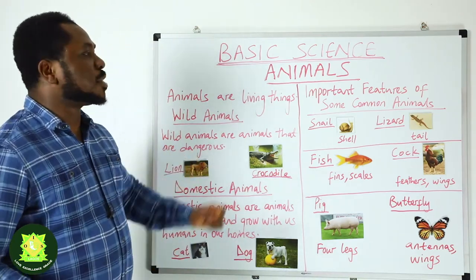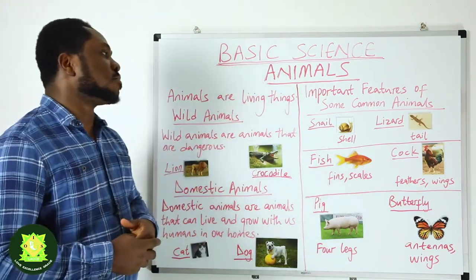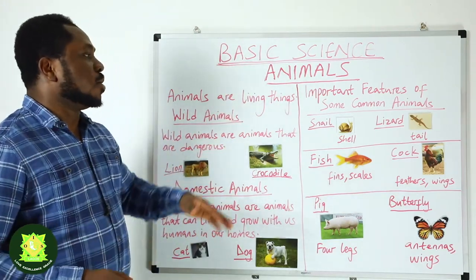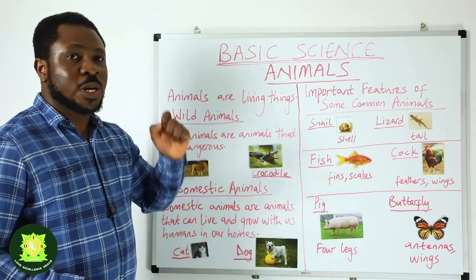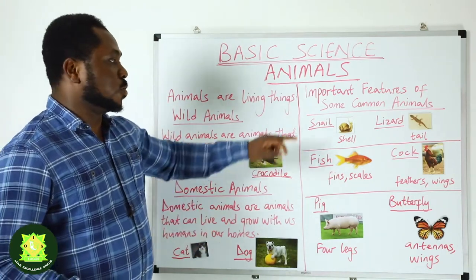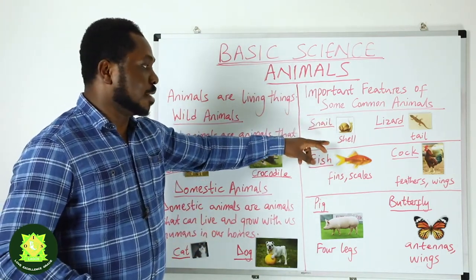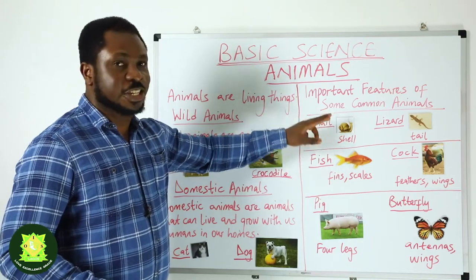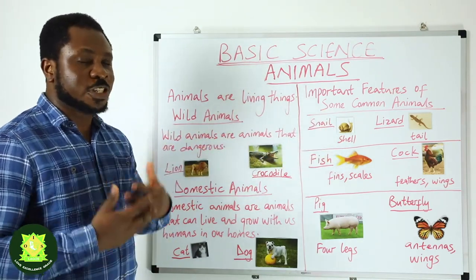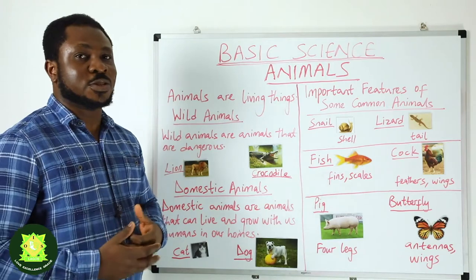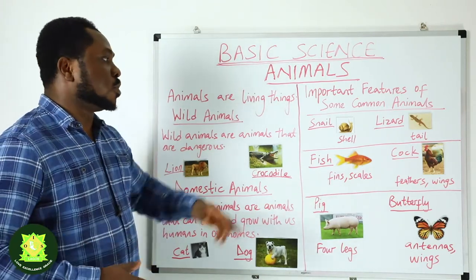Now we are going to talk about important features of some common animals. This is what a snail looks like. When you see a snail, you see the shell. The shell is an important feature of the snail. The shell protects them from predators and from other animals.